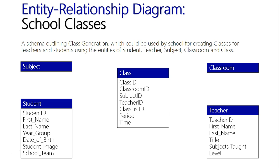Now that we've got teachers and students associated with the class, we need to assign a room. The classroom would have an ID, a capacity for the number of students it can take, and a type — such as a tech lab or science lab — which also relates to the facilities available through that room.